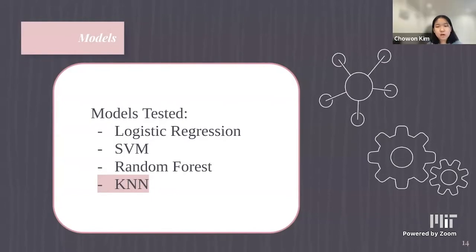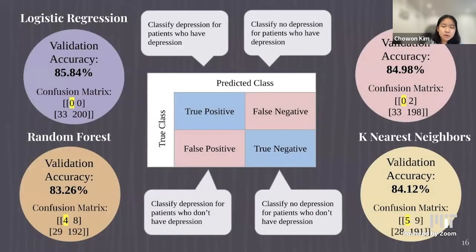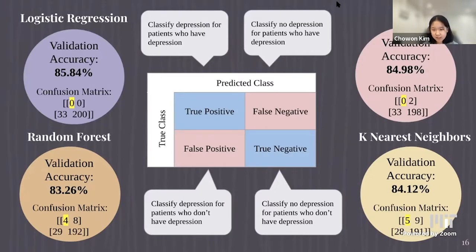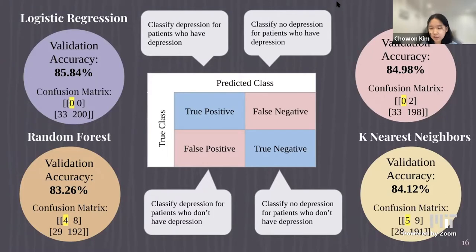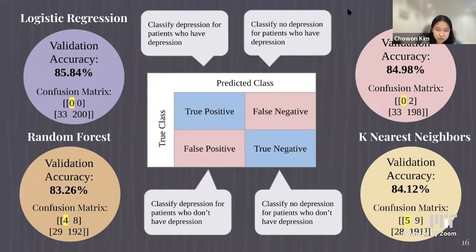We tested four models: logistic regression, SVM, random forest, and KNN. For our final model, we chose KNN. Instead of focusing only on validation accuracy, we focused on both the confusion matrix score and validation accuracy. Although logistic regression and SVM had higher validation accuracy, their confusion matrices predicted zero for the true positive rate — meaning they couldn't identify any depressed patients. KNN had five for the true positive rate, meaning it could correctly identify patients with depression.